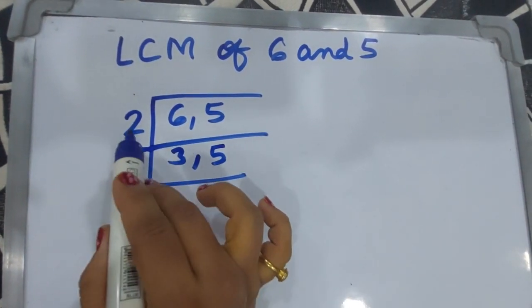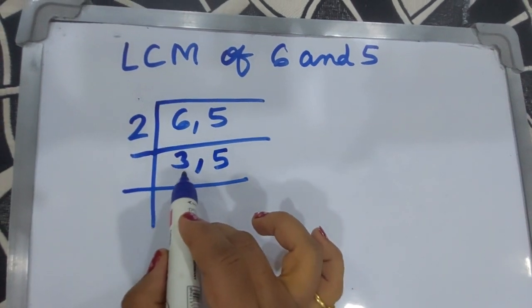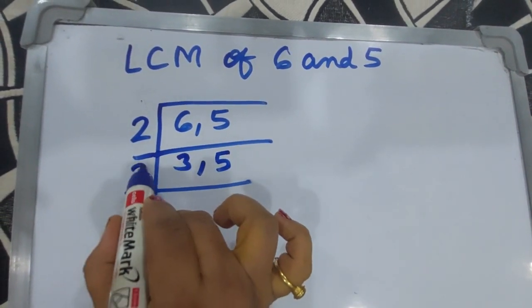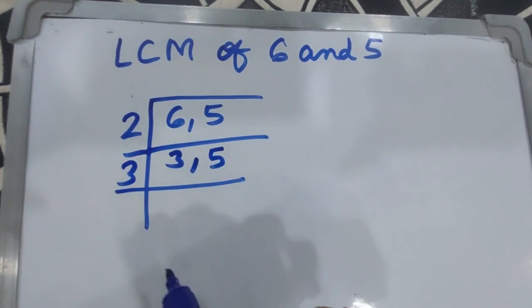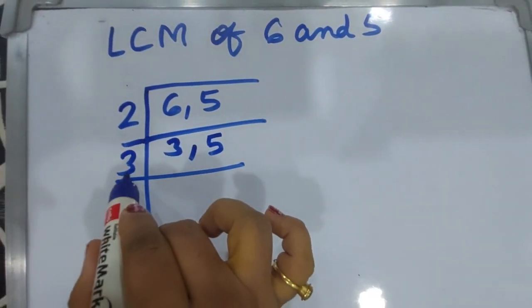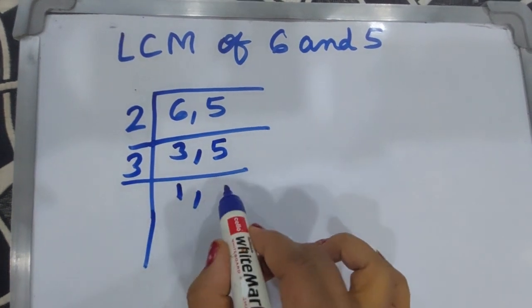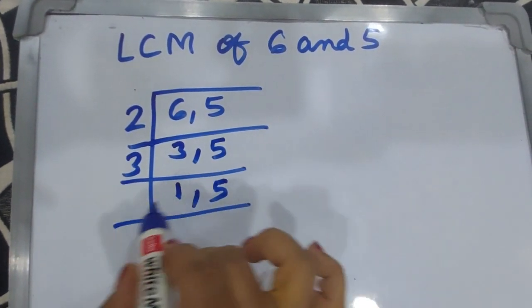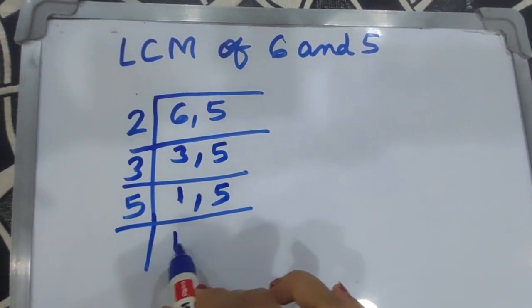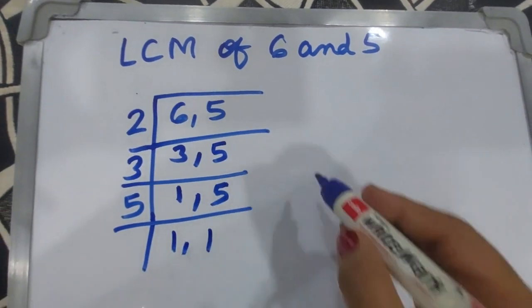Now 2 is not divisible by 3 and 5, so take the next prime number, which is 3. 3 goes into 3 once. 3 is not divisible by 5, so write 5 as it is. Now divide by 5: 5 goes into 5 once, giving 1 and 1.